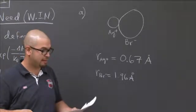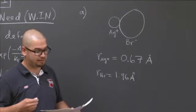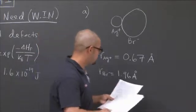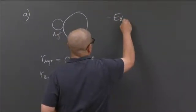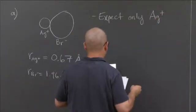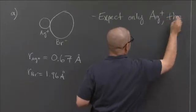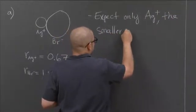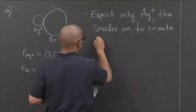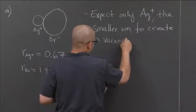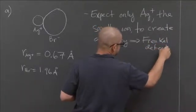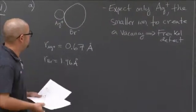So for part A, do I expect it to create silver plus vacancies or Br minus vacancies or both? I would expect just to be silver plus, given the size of your cation. Expect only Ag plus, which is your silver cation or the smaller one, to create a vacancy. And hence, this leads to a Frankel defect.